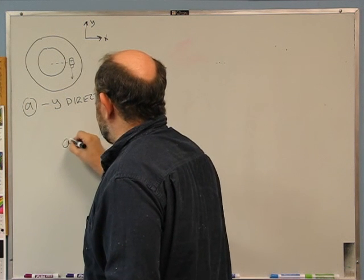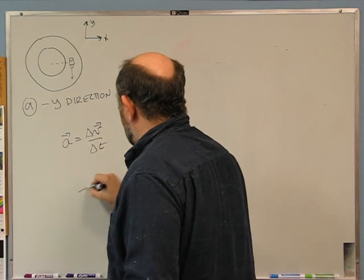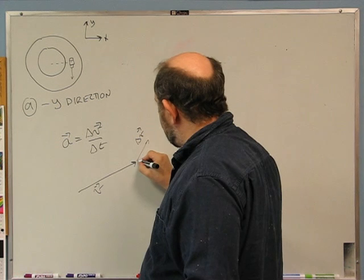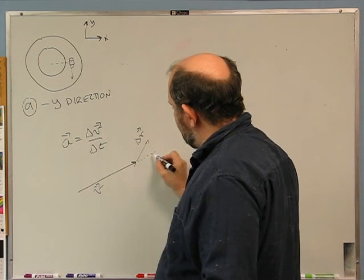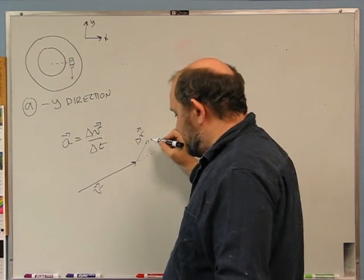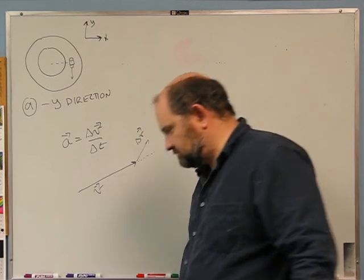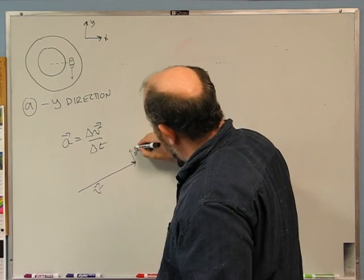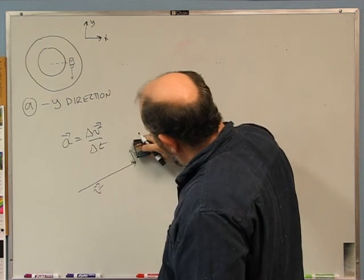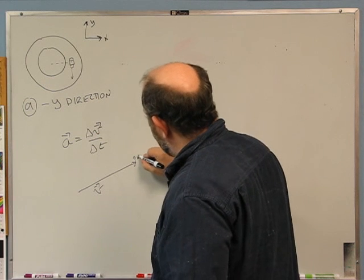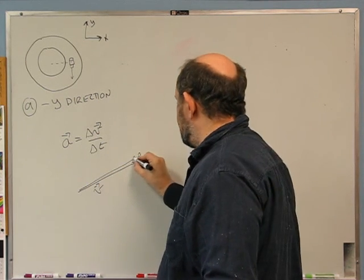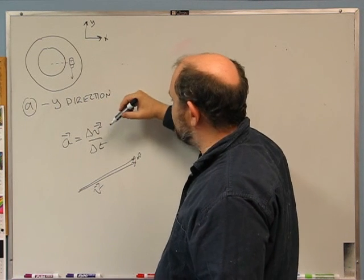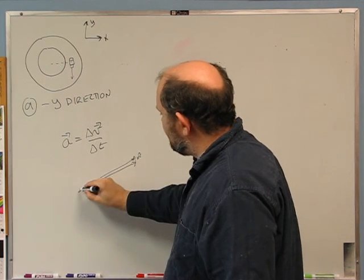Remember that acceleration is delta v over delta t. If I have v like this and there's a delta v in some small delta t, notice there's a component along v — if there's any component along v, then v will get longer. The only way to keep the speed constant is if delta v is exactly at a right angle to v. It has to also be very small, so delta v needs to be in that perpendicular direction.